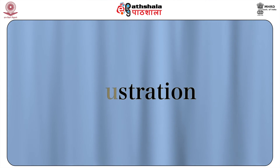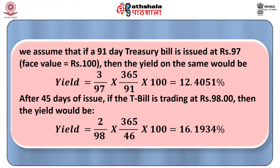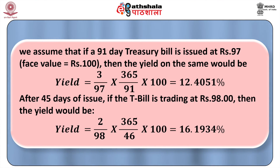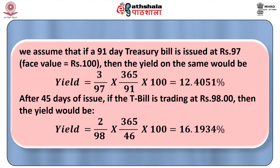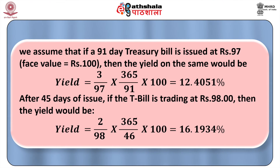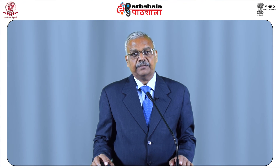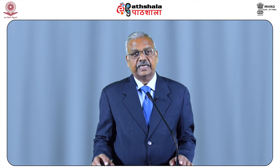Illustration: If a 91-day treasury bill is issued at Rs. 97 with a face value of Rs. 100, then the yield would be: Yield = (3/97) × (365/91) × 100 = 12.4051%. After 45 days of issue, if the T-bill is trading at Rs. 98, then the yield would be: (2/98) × (365/46) × 100 = 16.1934%, where the remaining maturity of the treasury bill is 46 days (91 minus 45).